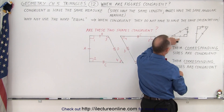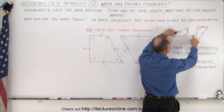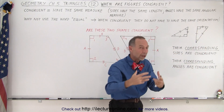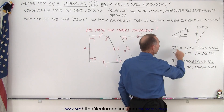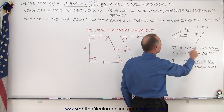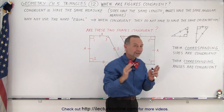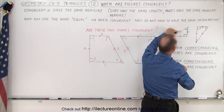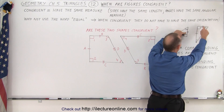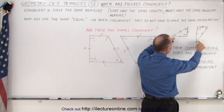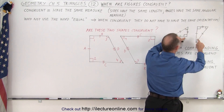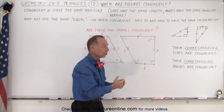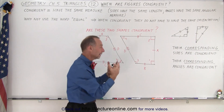Looking at the sides: this side has one little line through it, and so does this side. This side has two little lines, and so does this side. This one has three little lines, and so does this side. We indicate that what we call corresponding sides have the same length. So the corresponding sides are congruent and the corresponding angles are congruent — this side corresponds to this side, this side corresponds to this side, and this side corresponds to that side. The same applies to the angles.